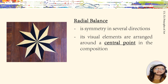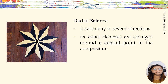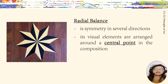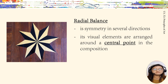Lastly, we have radial balance. Technically, this is symmetry in several directions — the visual elements are arranged around a central point in the composition. All visual elements are connected to that central point. These kinds of balanced designs are often circular, but other shapes lend themselves to radial balance as well — like squares, hexagons, octagons, stars, and others. Symmetric and radially balanced artworks use formal balance, while asymmetric balance is referred to as informal balance.